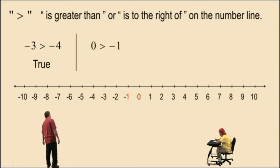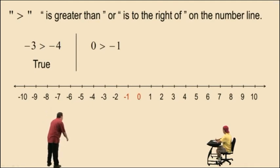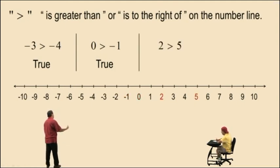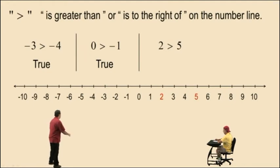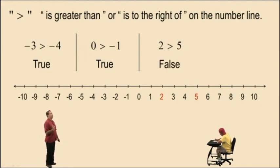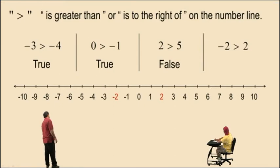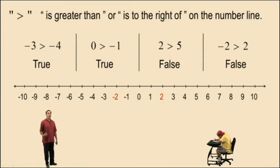Okay Charlie, 0 is greater than negative 1. Is 0 to the right of negative 1 on the number line? Yes. That's right, so it is a true statement. Okay Charlie, is 2 to the right of 5 on the number line? No. So this is a false statement — 2 is not greater than 5; 2 is actually less than 5. Is negative 2 to the right of 2 on the number line? Nope. So that's a false statement — negative 2 is actually less than 2.